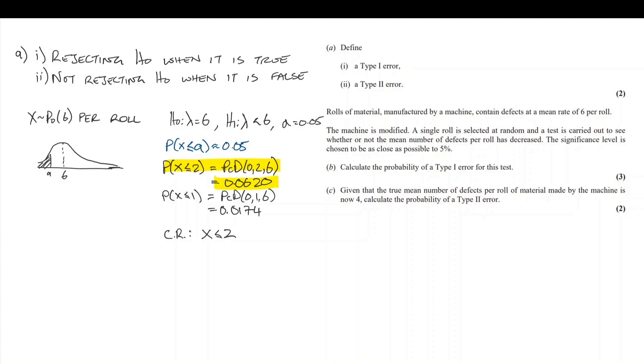We've been asked to find the probability of a type 1 error for this test. We actually have it on the screen already, but let's go through the formal process so we're in the habit. Probability of a type 1 error, this would be the critical region, the probability of the critical region with the original parameter.